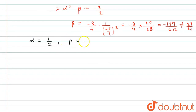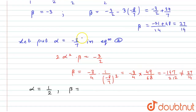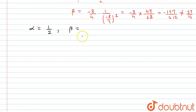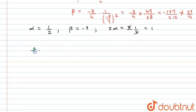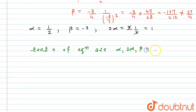With α = 1/2, β = -3, the third root is 2α = 2 × 1/2 = 1. Therefore the three roots of the equation are α = 1/2, 2α = 1, and β = -3. This is our required answer. Thank you.